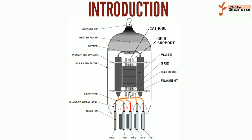The type known as a thermionic tube or thermionic valve uses the phenomenon of thermionic emission of electrons from a hot cathode, and is used for fundamental electronic functions such as signal amplification and current rectification. Non-thermionic types, such as a vacuum photo tube, achieve electron emission through the photoelectric effect and are used for detection of light intensities.